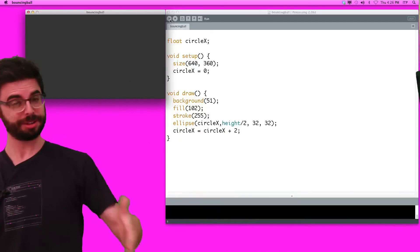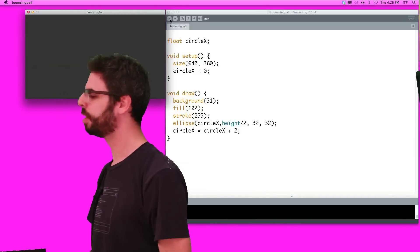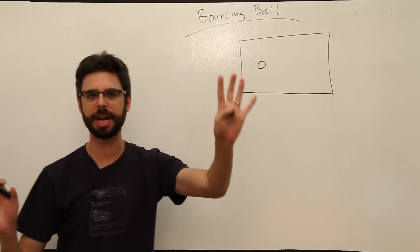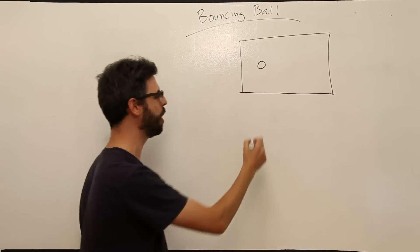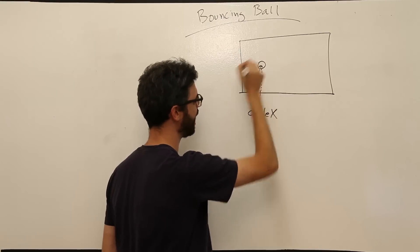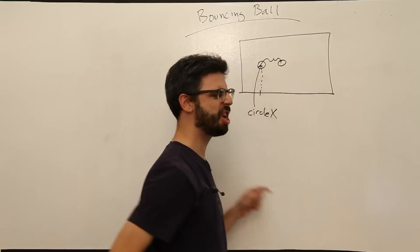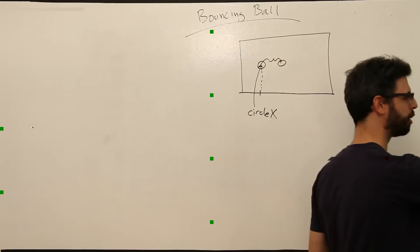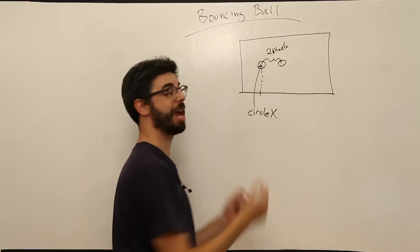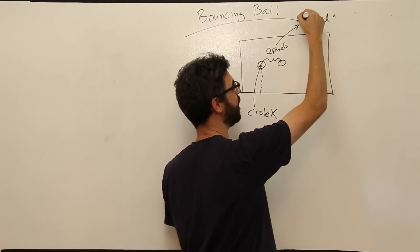We're going to use the conditional statement — that's what the last two videos were demonstrating. Let's take a look at our scenario. We have a processing window and a circle in that window. The circle is drawn at an x location of circle_x, and it moves every frame: circle_x equals circle_x plus two. So it moves two pixels every frame — we can think of that as x_speed, the speed along the x axis.